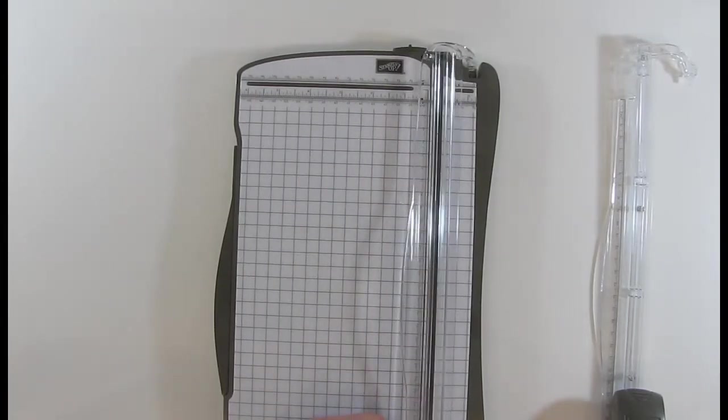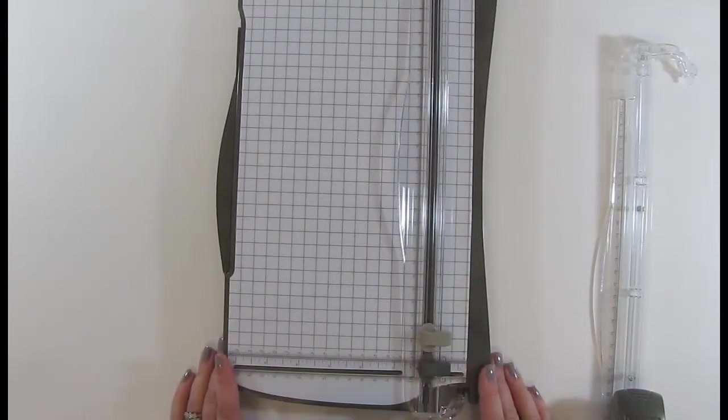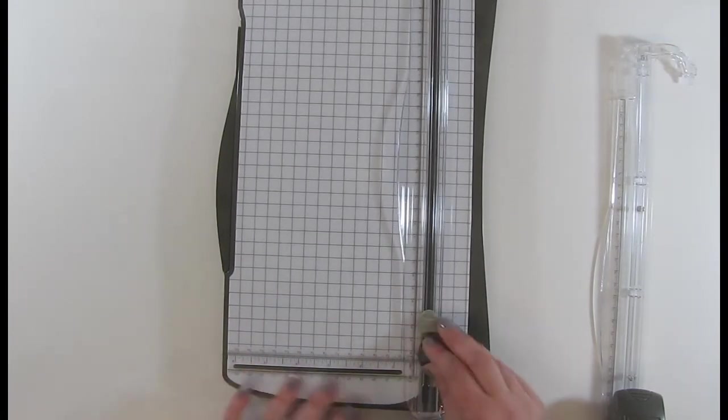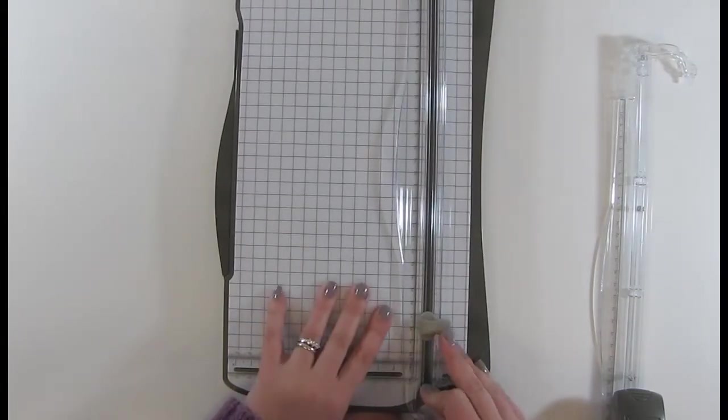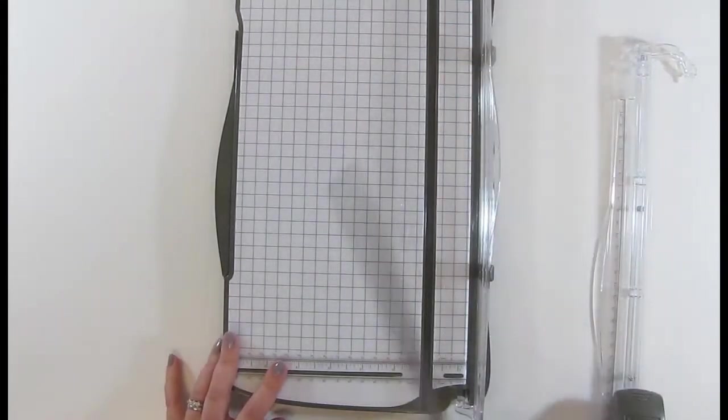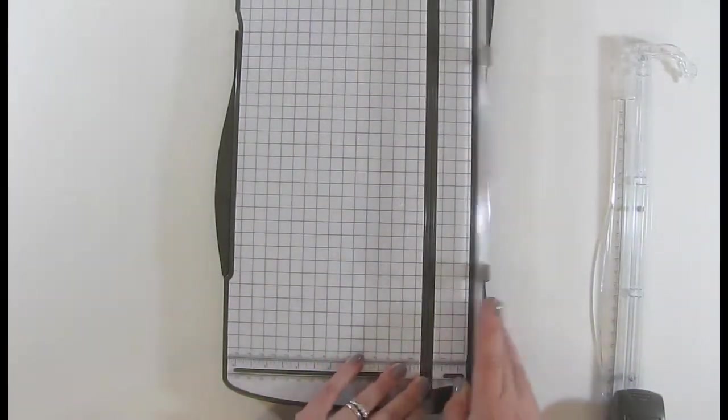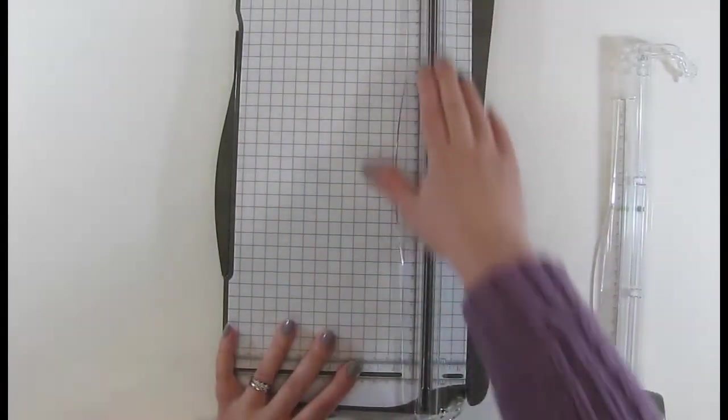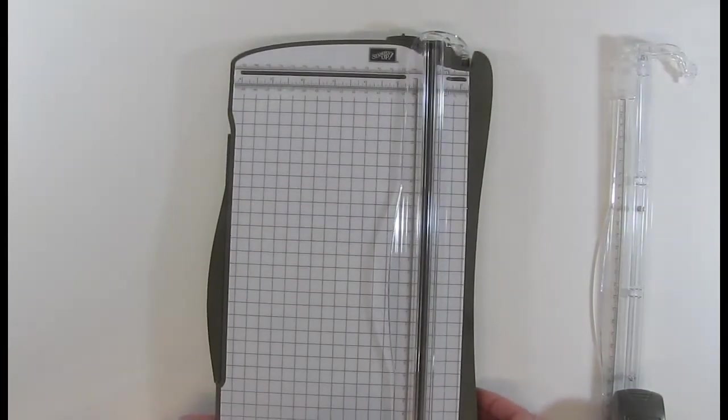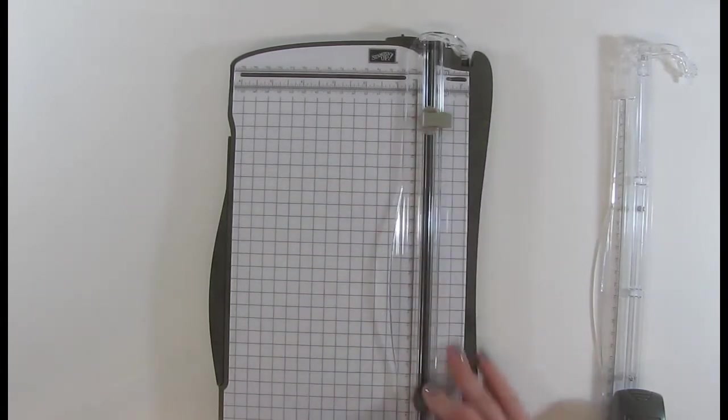The more you use it the softer it will become. The more thicker cardstock or glitter paper or glimmer paper, of course it will wear it down but for £5.50 for two blades that is pretty good really so just stock up on those and you've got them ready to go. I'd say if I could put a time on when I replace my blades I would say maybe every couple of months and I am prepping quite a lot for my classes.